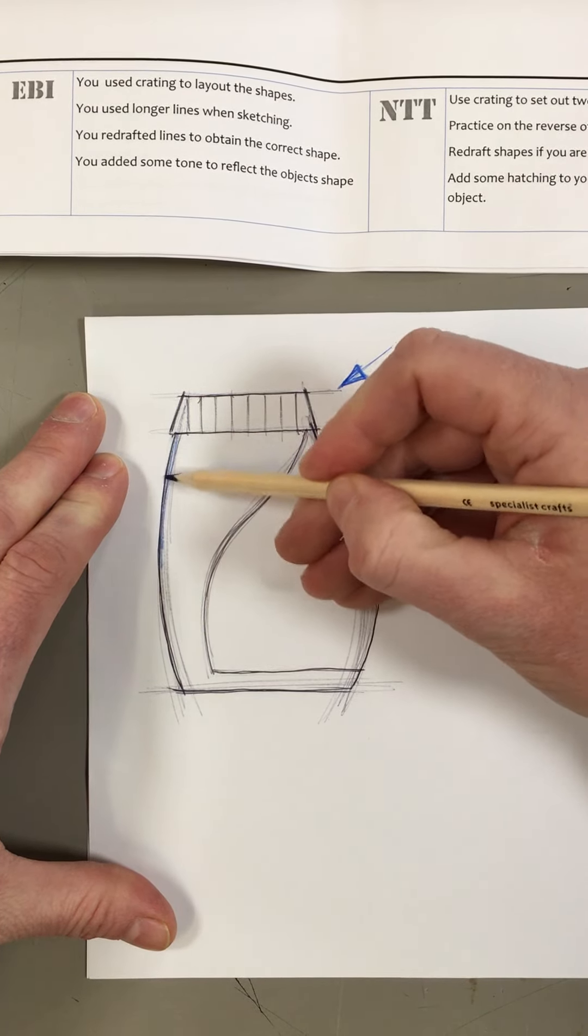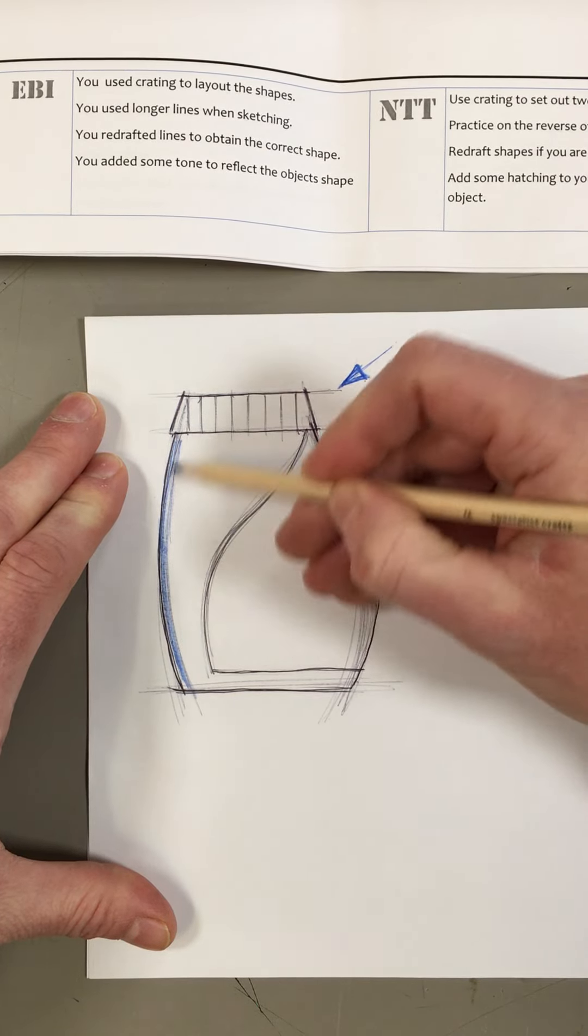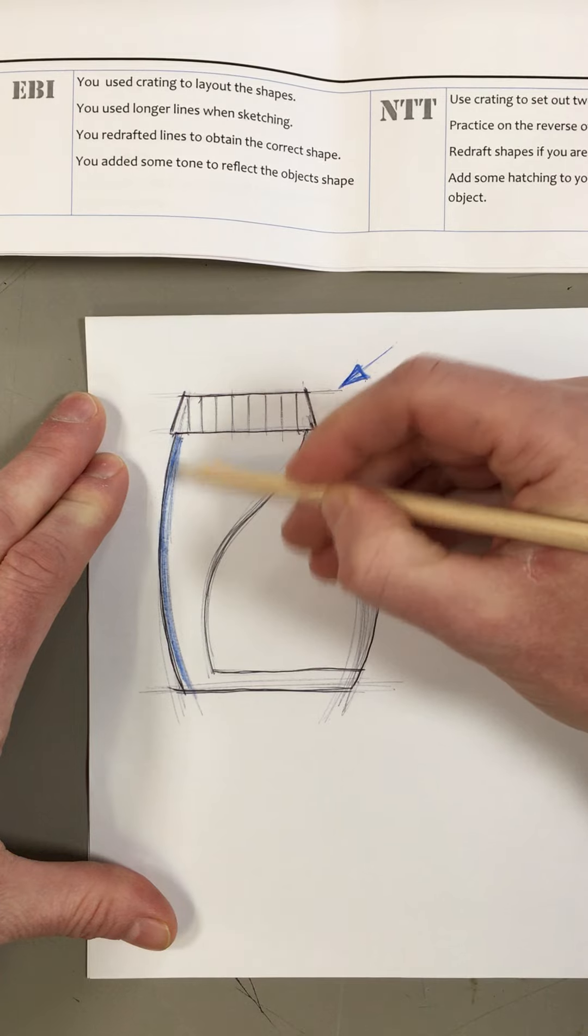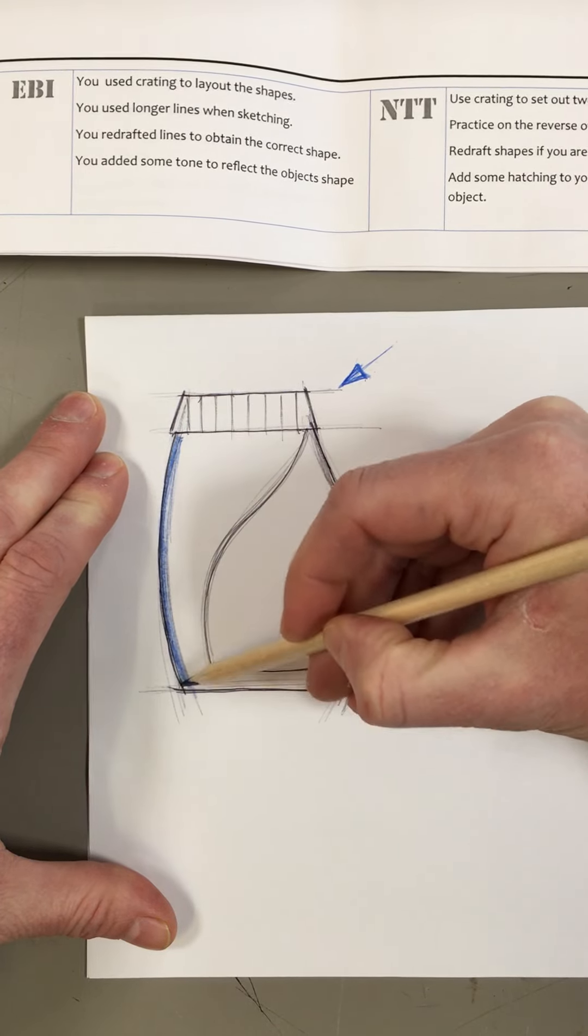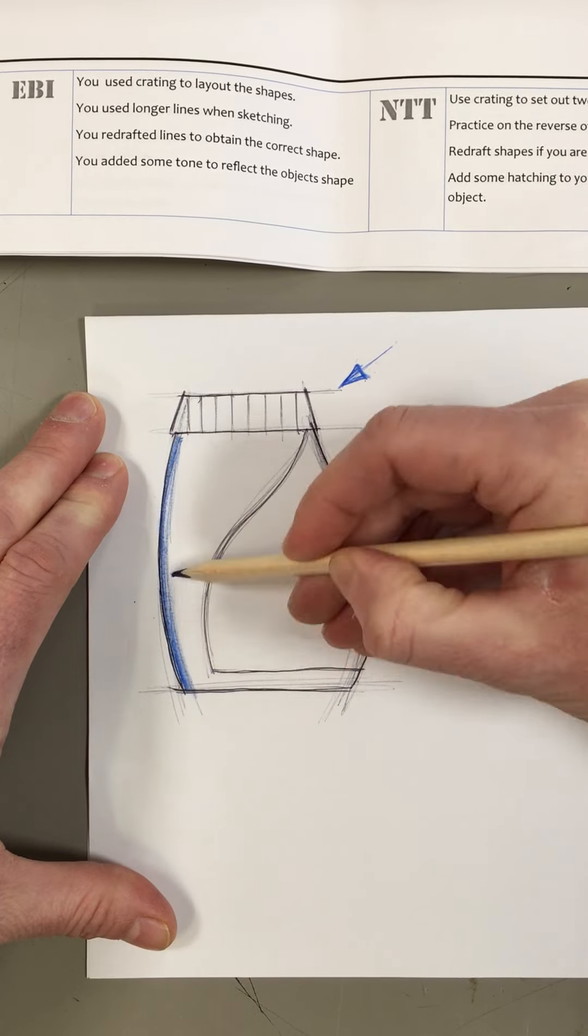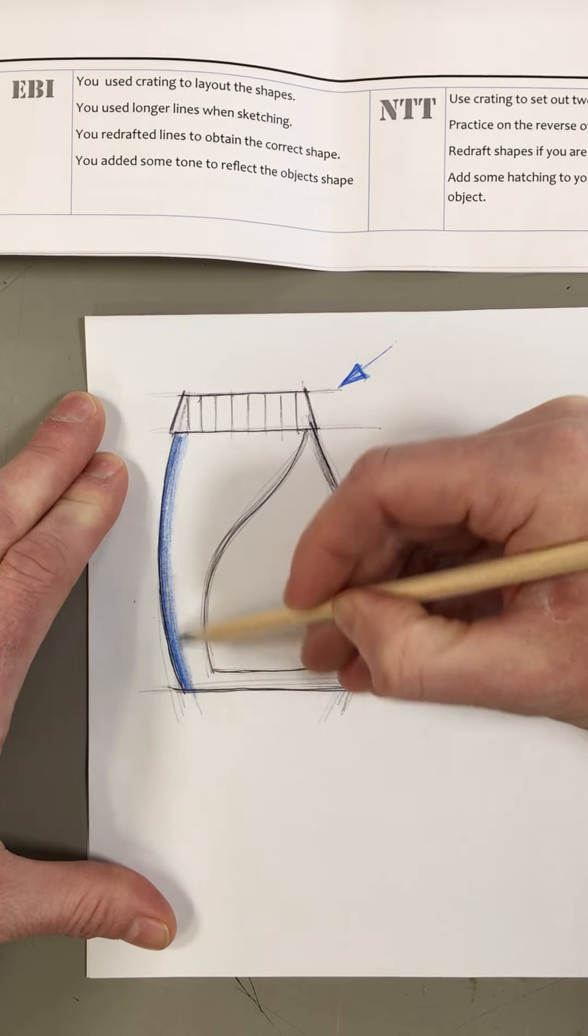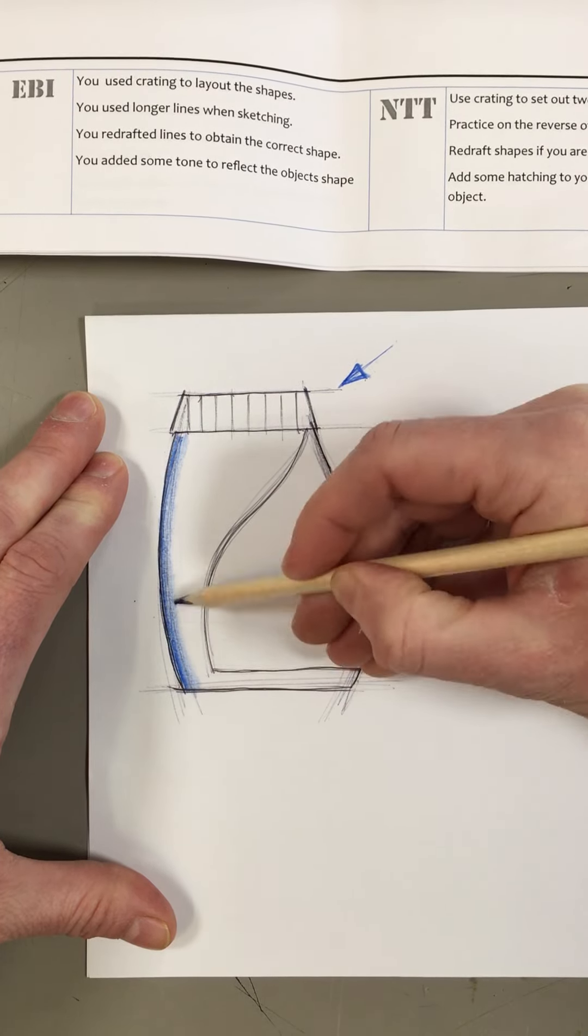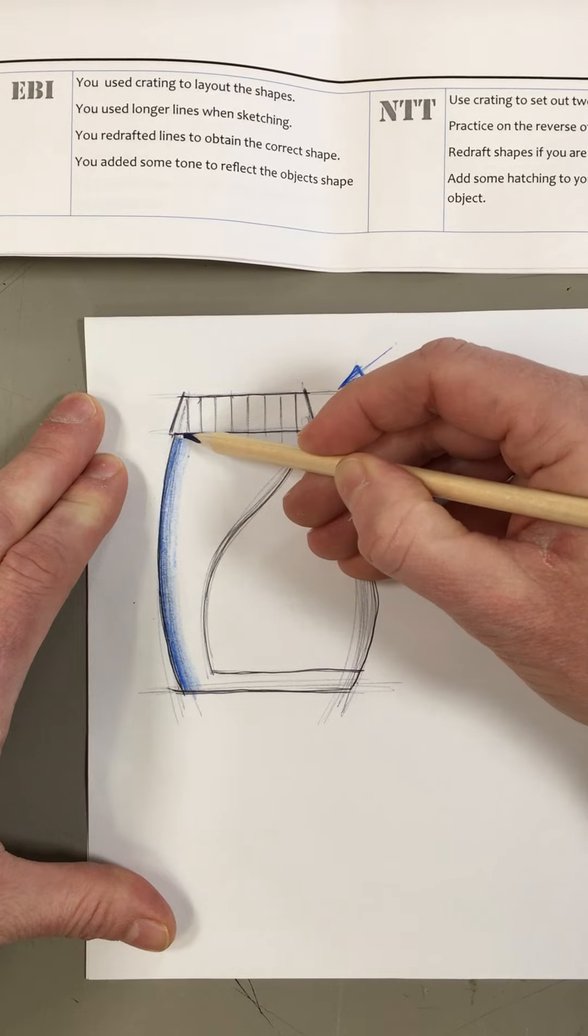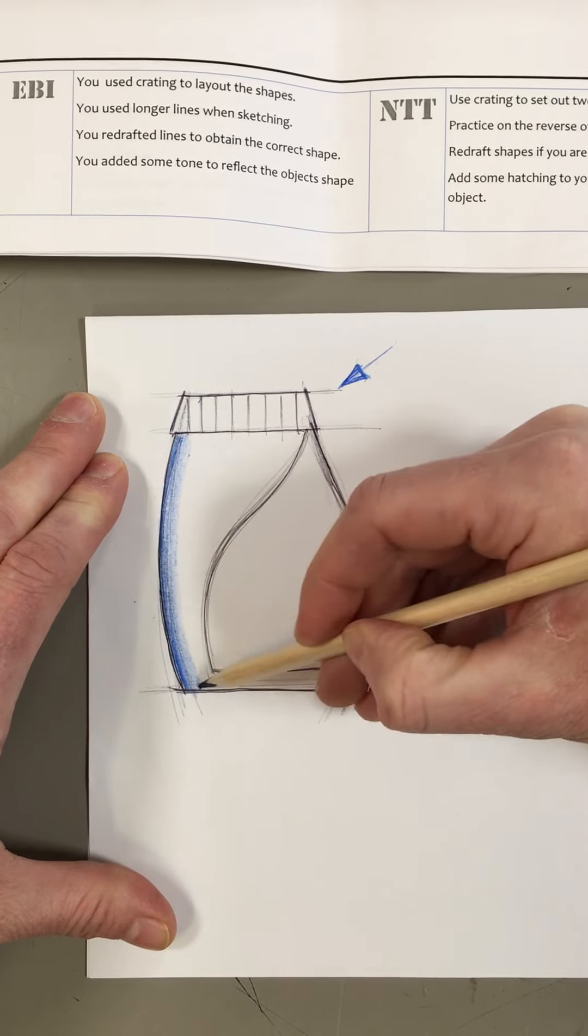What I'm going to do is just put some dark pencil crayon down that edge there. And I'm going to just blend it out. I'm trying to follow the curve of the actual shape.